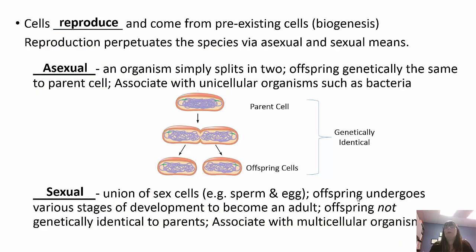Cells reproduce and come from pre-existing cells — a cell isn't going to spontaneously appear. Reproduction perpetuates the species by both asexual and sexual means. Asexually, one organism simply splits into two; the offspring are genetically identical to the parent cell, and unicellular organisms like bacteria usually use this method. Sexual reproduction requires two parents — it's the union of sperm and egg. The offspring undergoes stages of development to become an adult, is not genetically identical to the parents, and multicellular organisms reproduce this way.